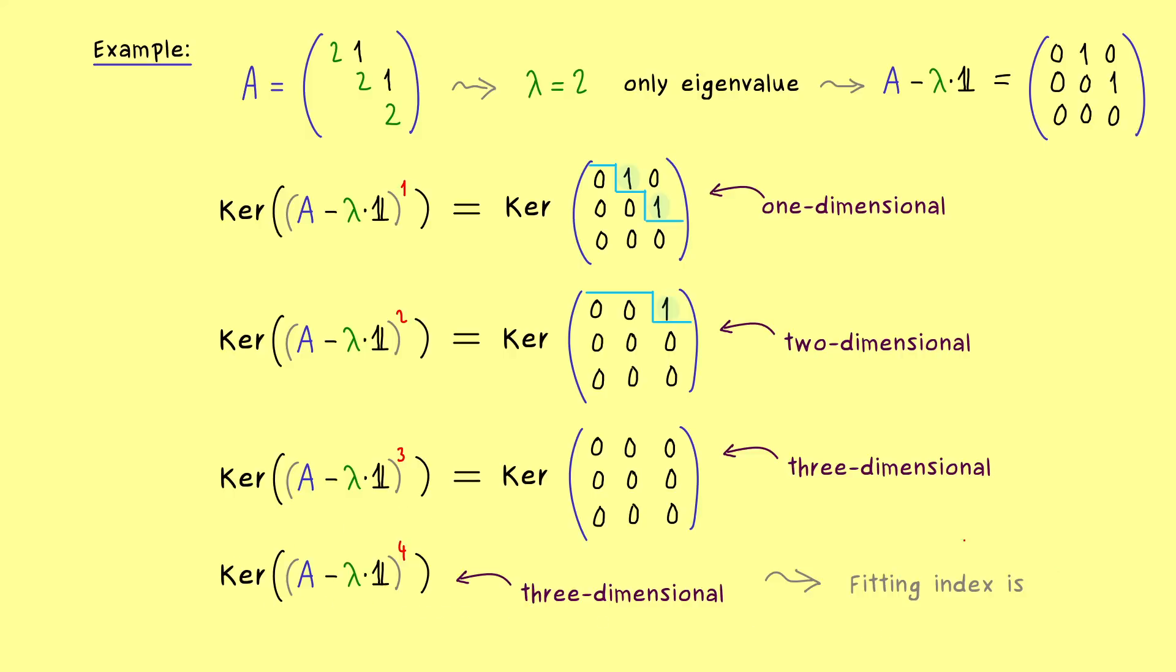So what we see here is that our chain from before is done after three steps, because afterwards nothing changes anymore. And as we learn soon, there we would say that the fitting index is given by three. So maybe this seems quite trivial here, but we will see that the existence of such a fitting index in general has some nice implications. In particular it's the key to the Jordan normal form transformation. And there I can already tell you, this is exactly what the next video will be about.